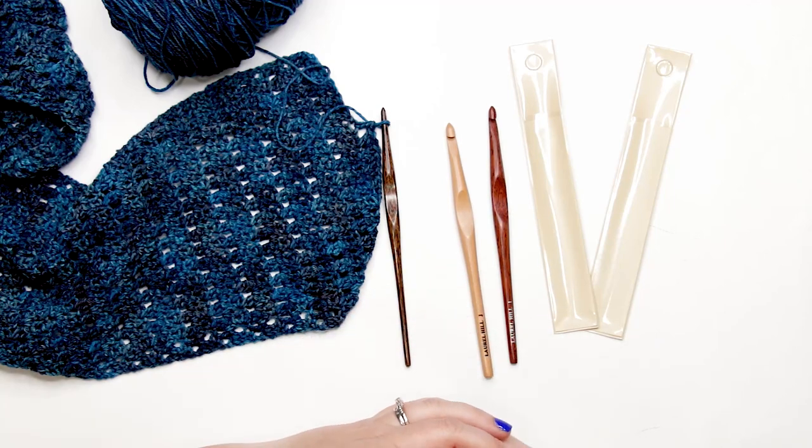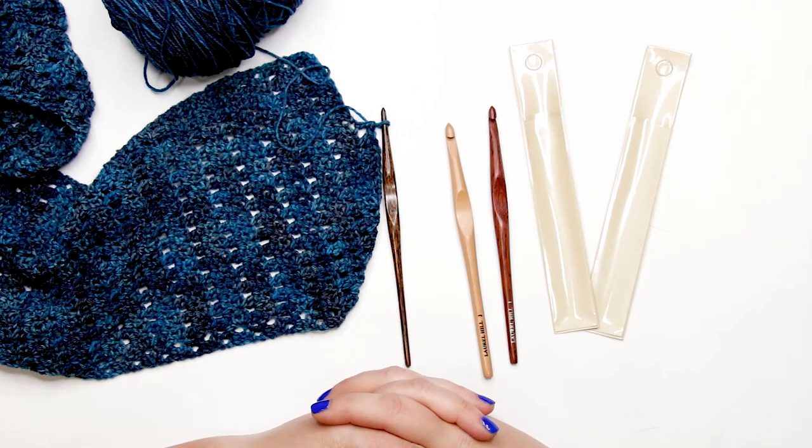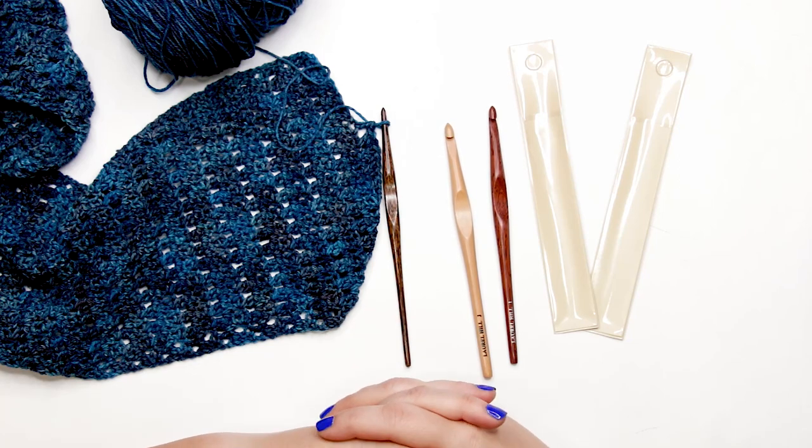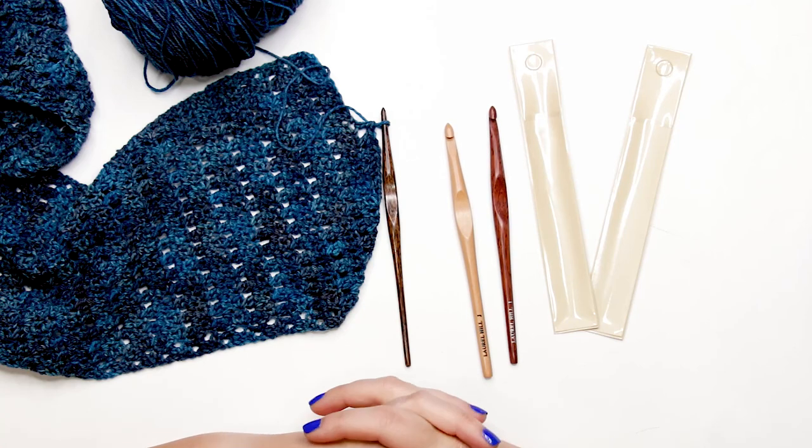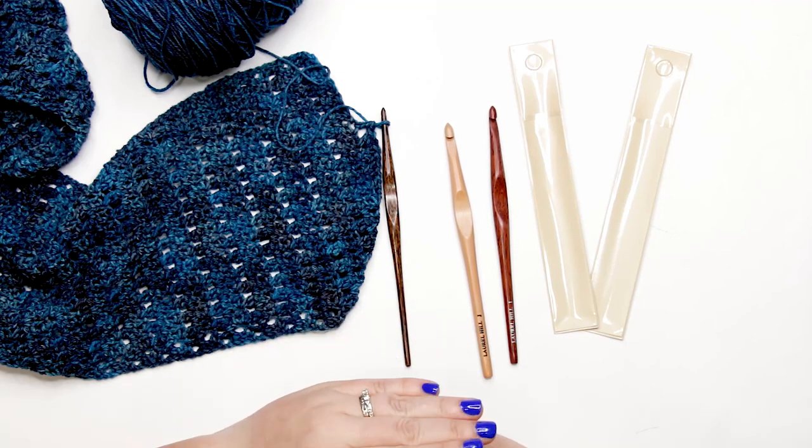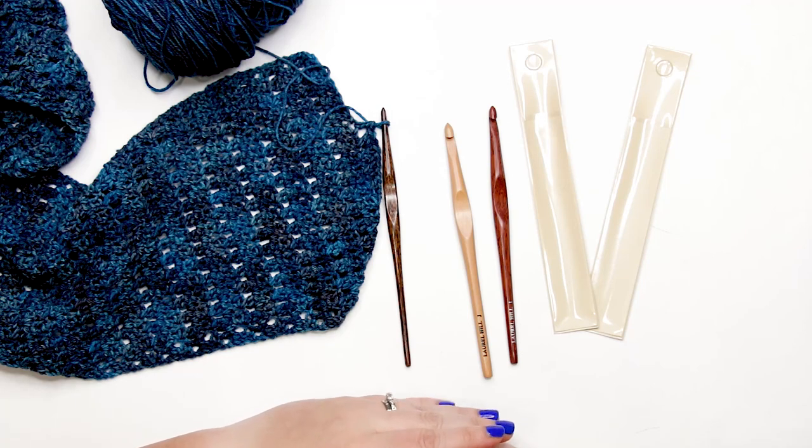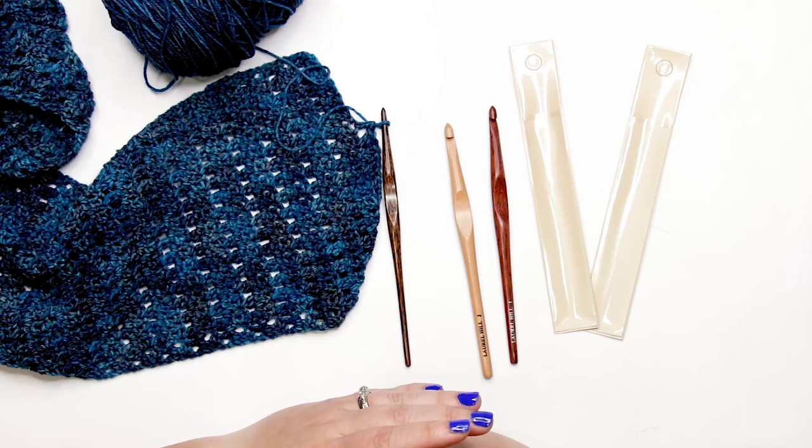Before we get into the actual crocheting with the hooks, I want to talk to you a little bit about the business. I'm a big fan of supporting small businesses, and Laurel Hill is a small family-run operation that was started about 19 years ago by owner Rick Brown and is now co-operated by Rick and his son Danny. They have expanded their business beyond just selling their own homemade crochet hooks into selling a variety of different knitting and crochet products from different fiber arts businesses.